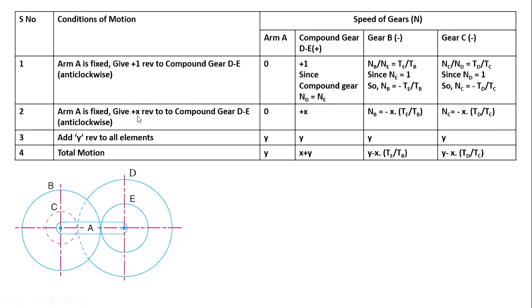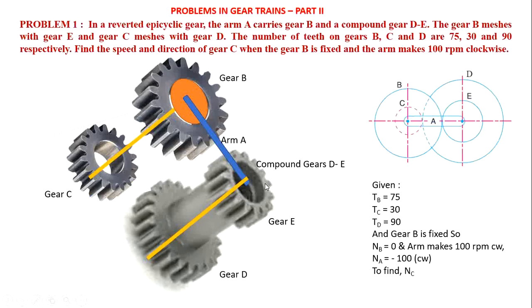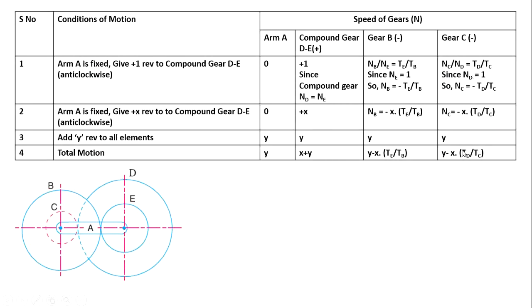The second step is to add X revolutions to all elements. Instead of 1 revolution, we add X revolutions to all elements. Then add Y to all. So total motion: arm = Y, compound gear DE = X plus Y, gear B = Y minus X times TE by TB, gear C = Y minus X times TD by TC. These algebraic expressions are the speeds of compound gear DE, gear B, and gear C. We need to determine speed of gear C.